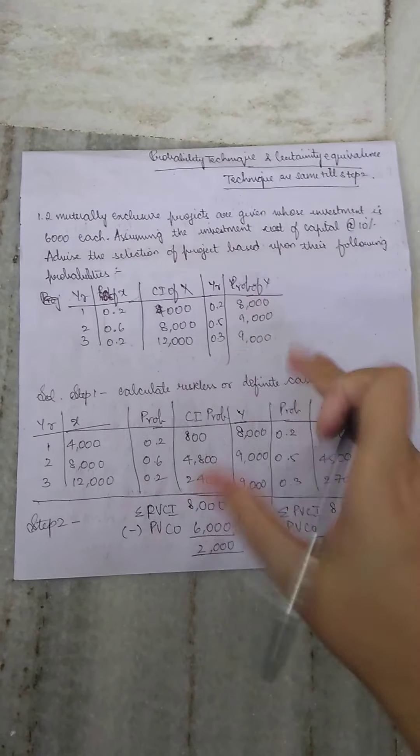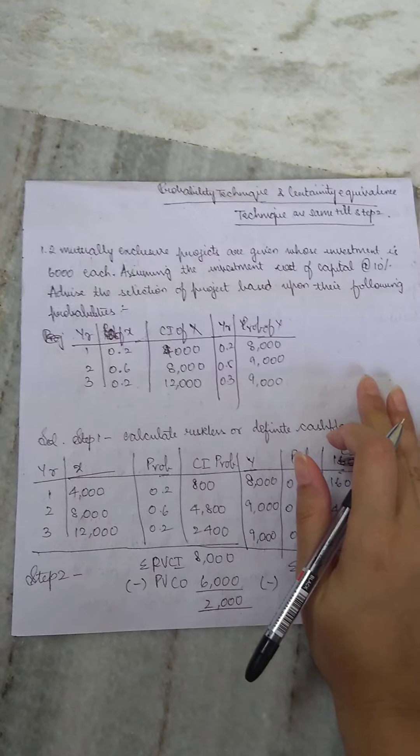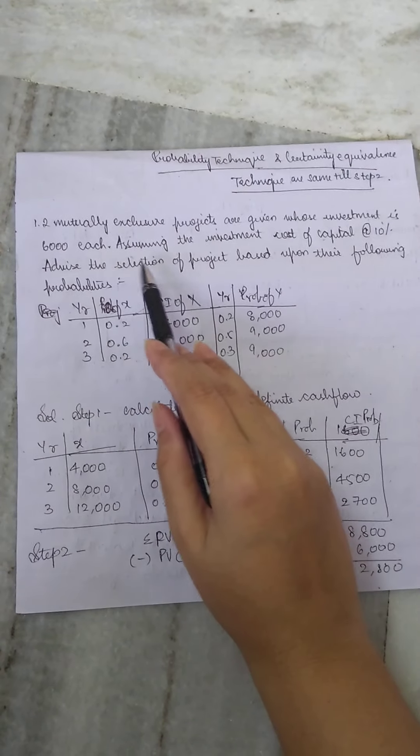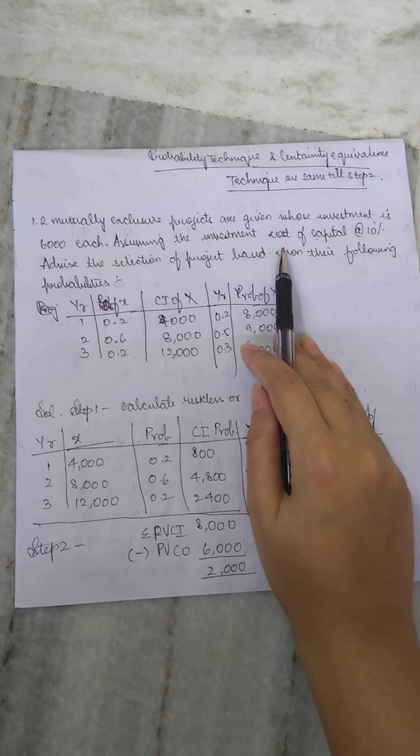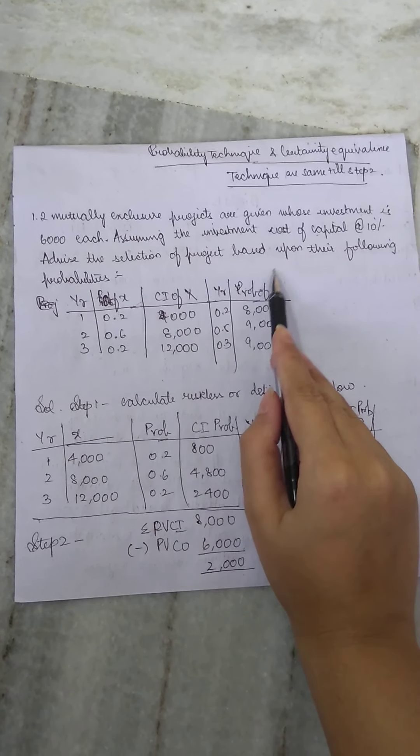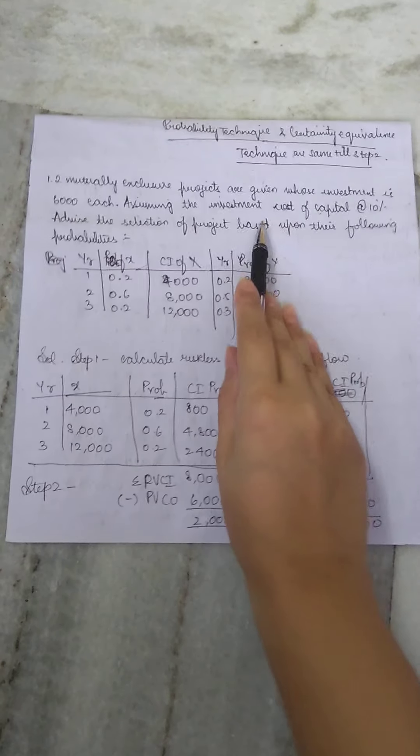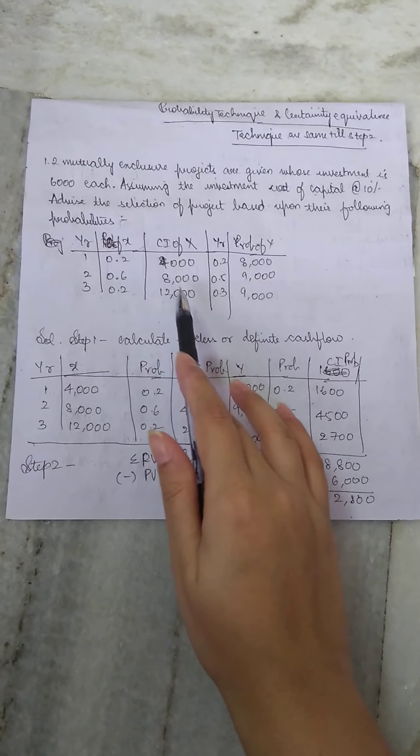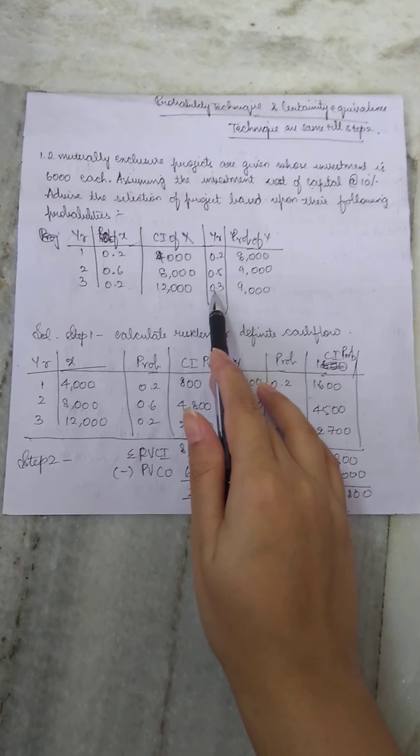Now we will be going through a sum so that it will be easy for you. Here we have two mutually exclusive projects whose investment is 6000 each, assuming the investment cost of capital at 10%. Advise the selection of project based upon the following information. Now again we have two projects X and Y. They have given cash flows and their probabilities.